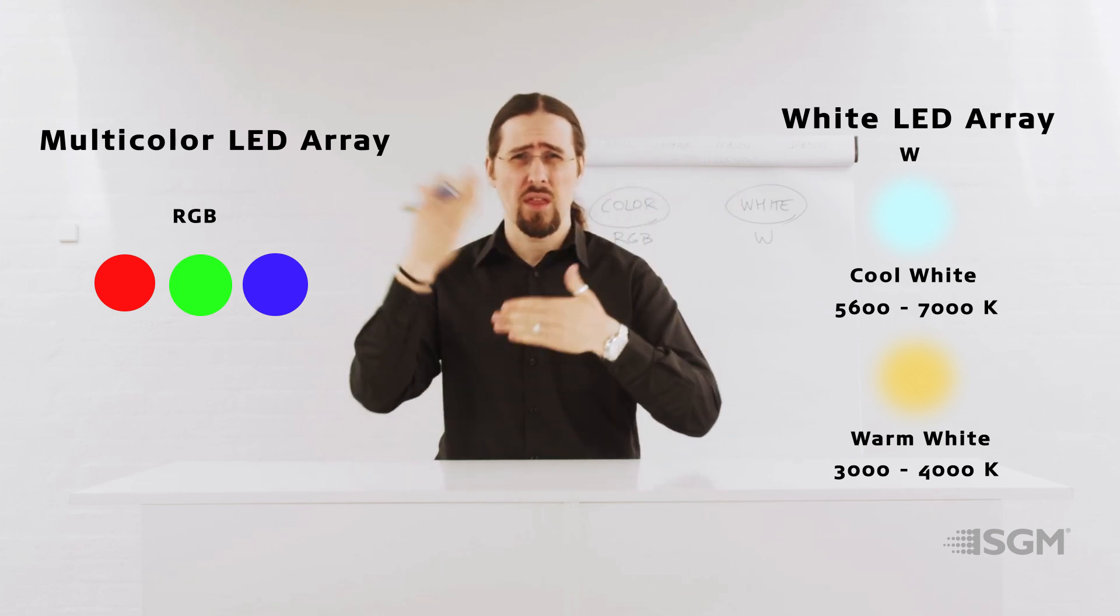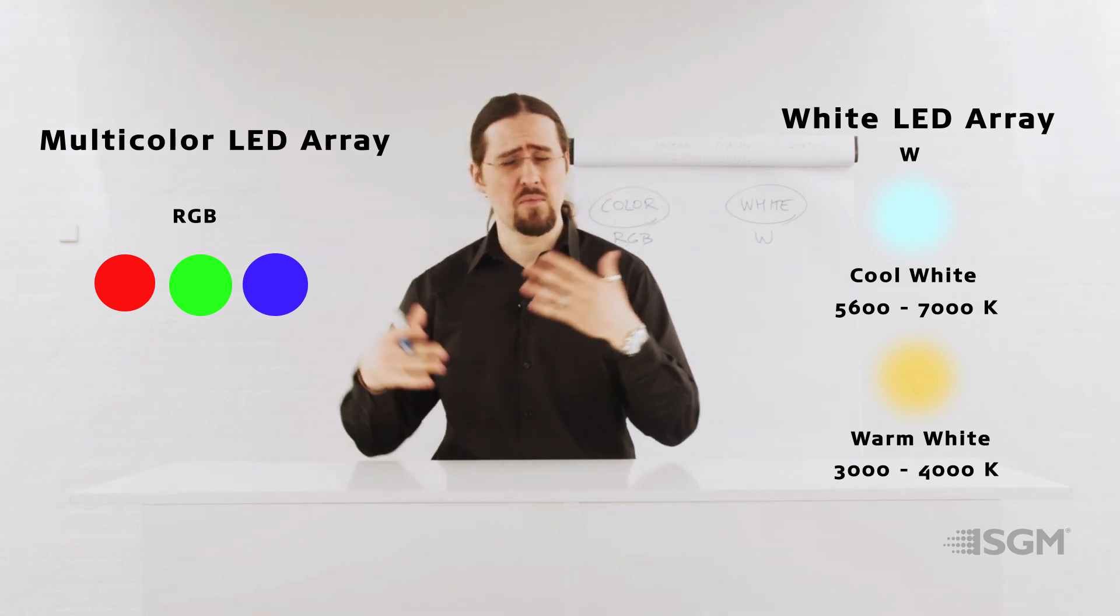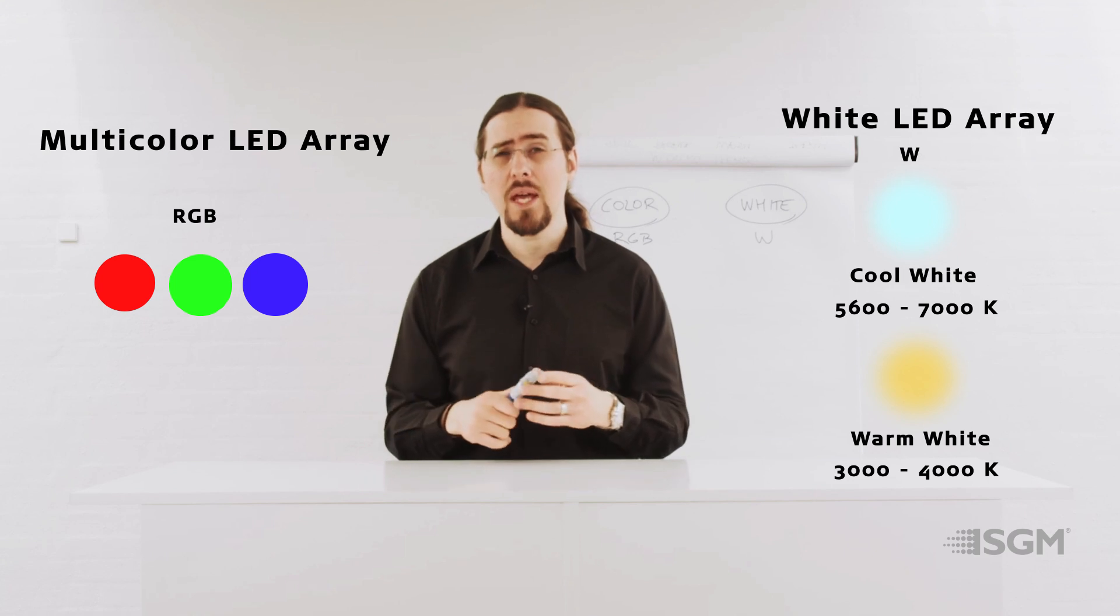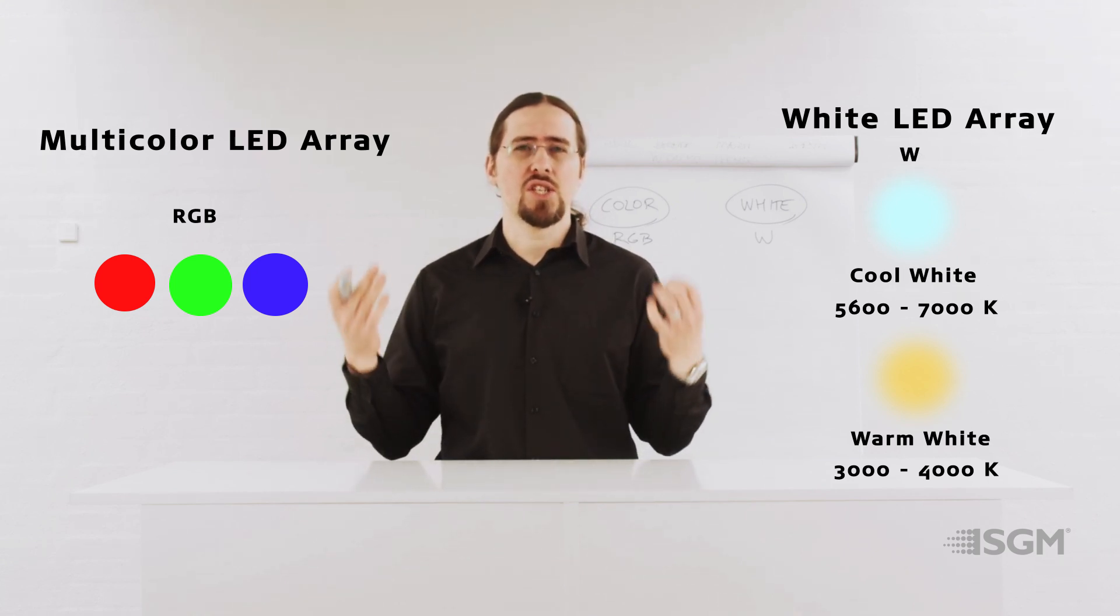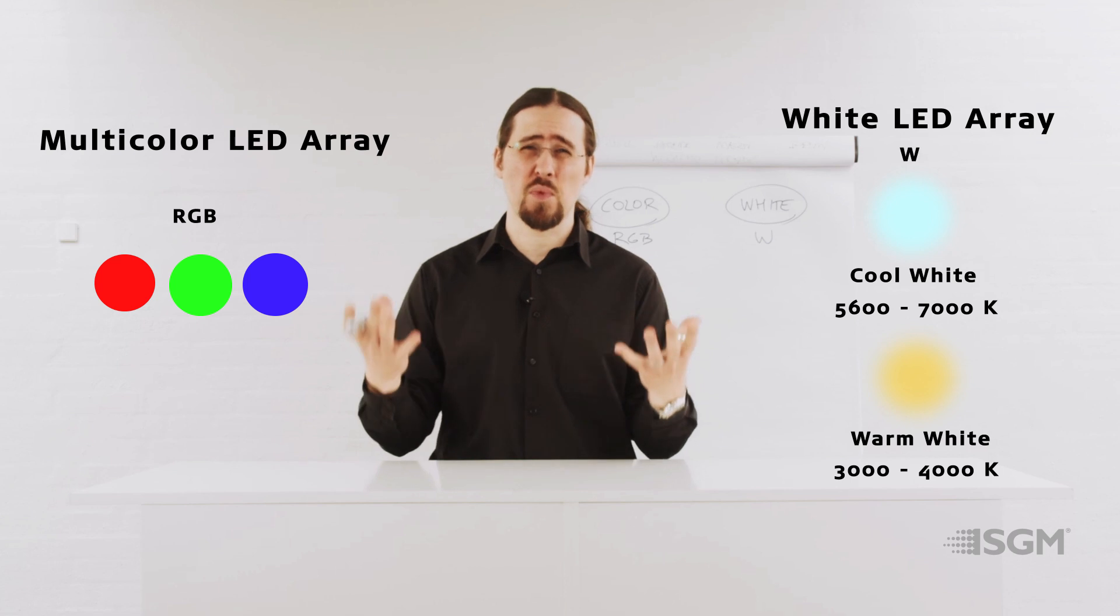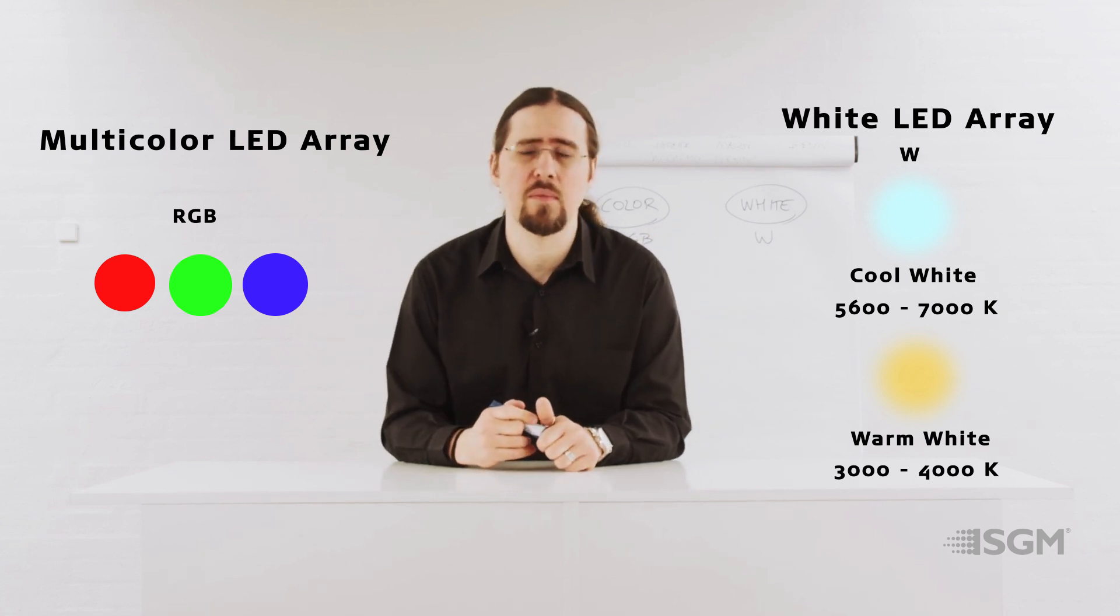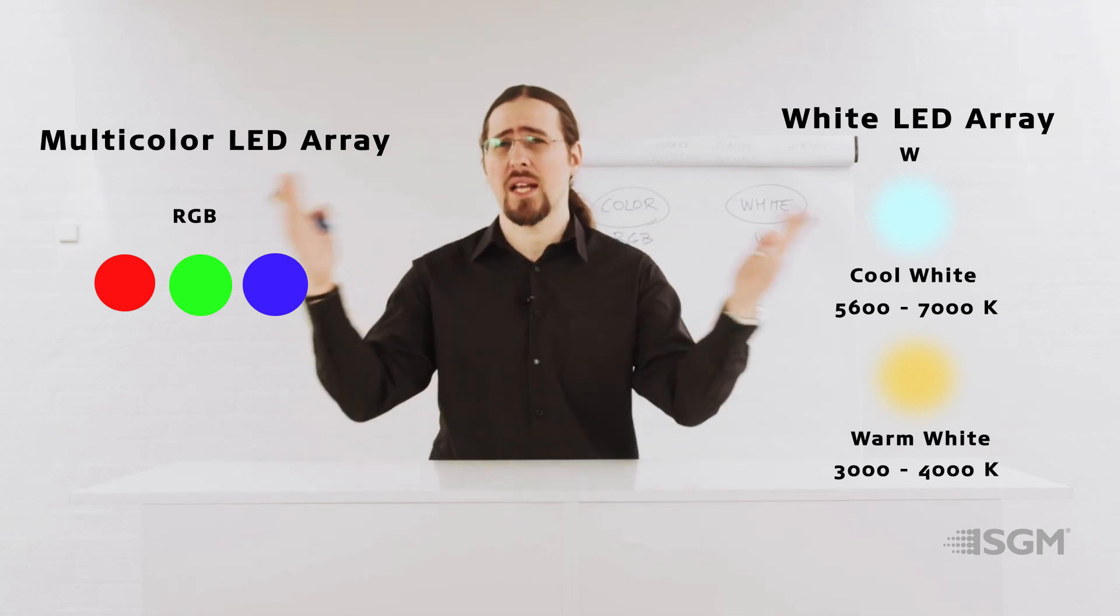Sometimes you are very interested in getting a lot of output out of your white, and then shape it with a lot of effects, gobos, prism, etc. If you are using a moving head, or just if you are using a wash light, generating as much visibility as possible for a building, for example. So everybody can see it from a long distance.